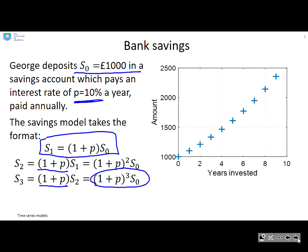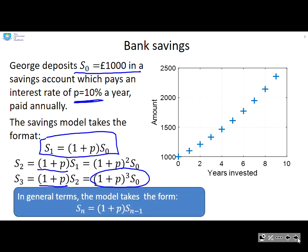I can draw a graph of this and show how his savings grows with year. And in general terms, I can write a model of the form S_n, so the amount after n years is (1 + p) times the amount after n minus 1 years.